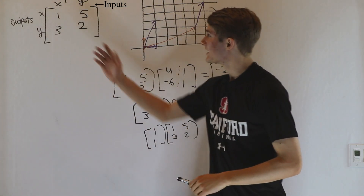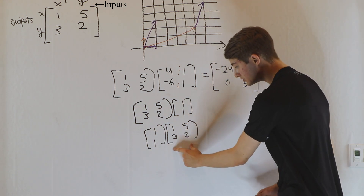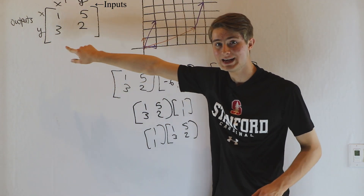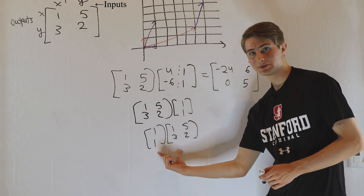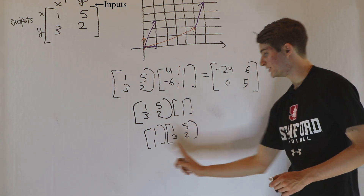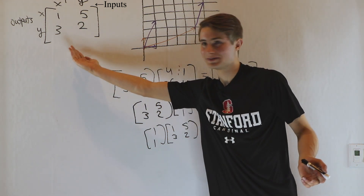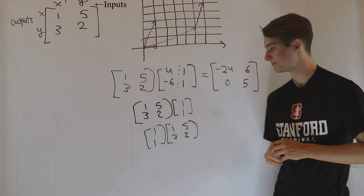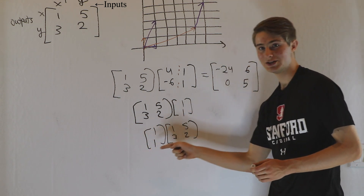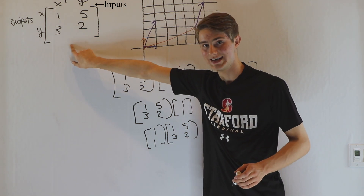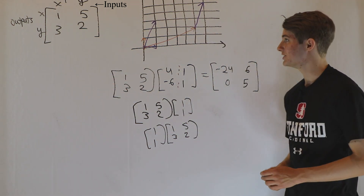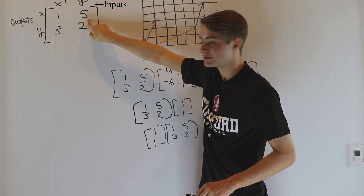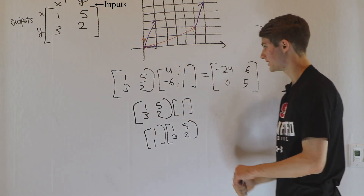But we weren't allowed to do our vector times the matrix on the right, because we only have one column and two rows. This 2×1 matrix, or vector, has one column, which means it takes one input — we're only looking at the x input. But here we have a 2×2 matrix with two rows, meaning it gives two different outputs: an x output and a y output. So the reason the number of columns on the left has to equal the number of rows on the right is that the number of inputs going into the matrix must match the number of inputs it takes. Matrix multiplication is just looking at inputs and outputs.